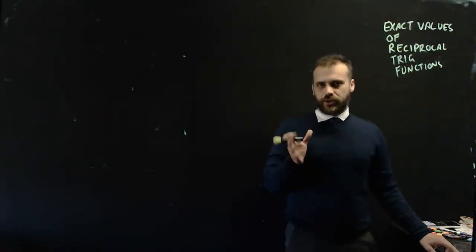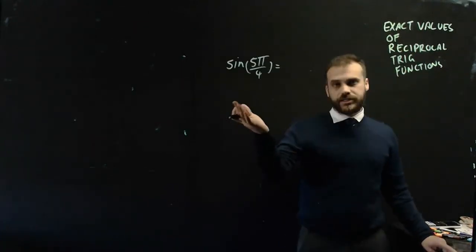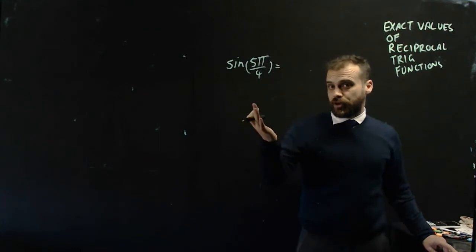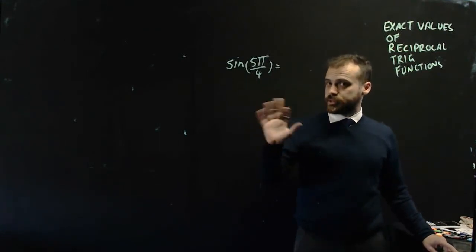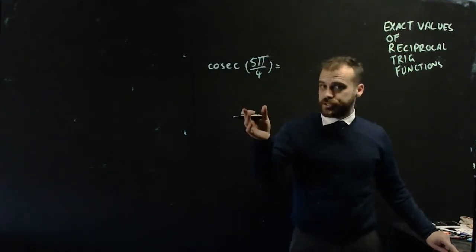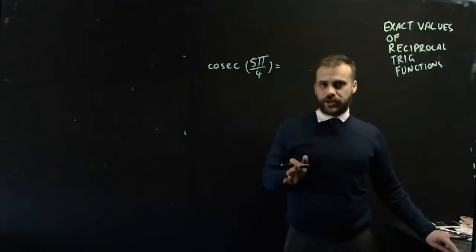So you already know how to find the exact value of trig functions. For example, you should easily be able to find the exact value of sine 5π/4. But what if the question was a little bit different? The exact value of cosec 5π/4? Well, it's actually really, really straightforward.